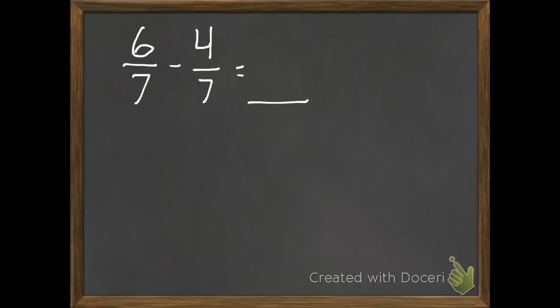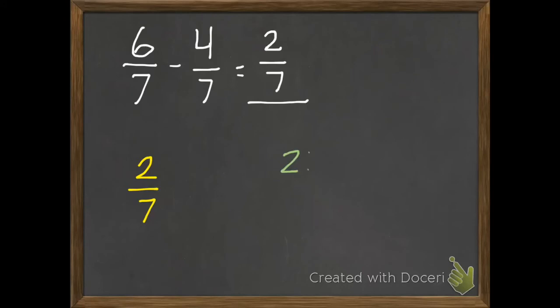One more example. 6 sevenths subtract 4 sevenths equals 2 sevenths. We have to check if this is in simplest form. My factors of 2 are just 1 times 2. Can I divide 7 by 2? No. So 2 sevenths is my answer.